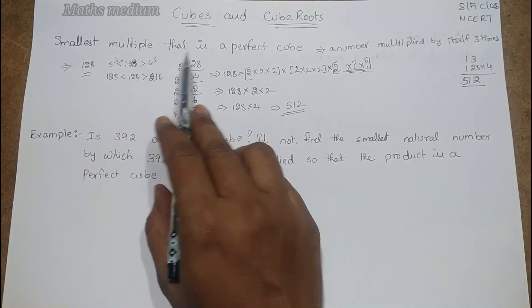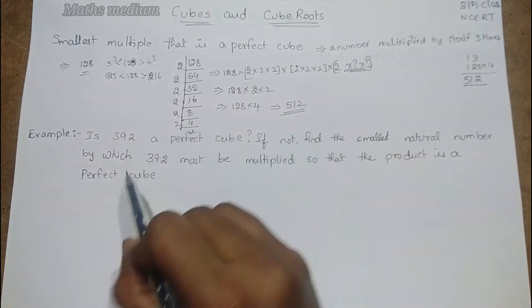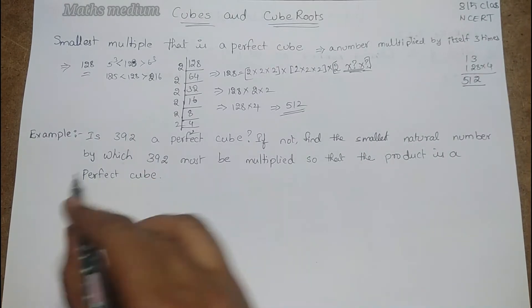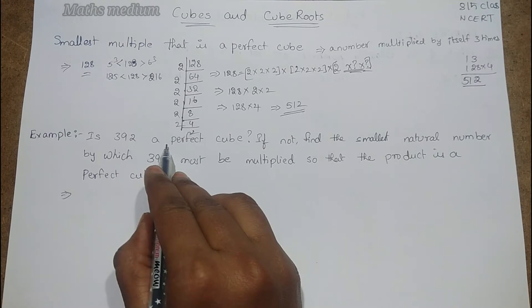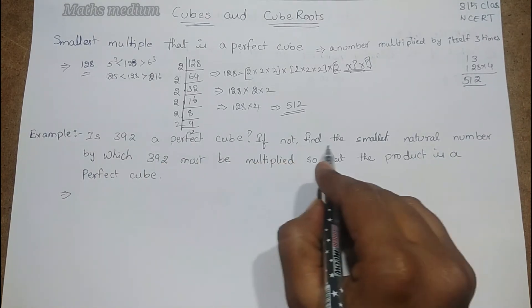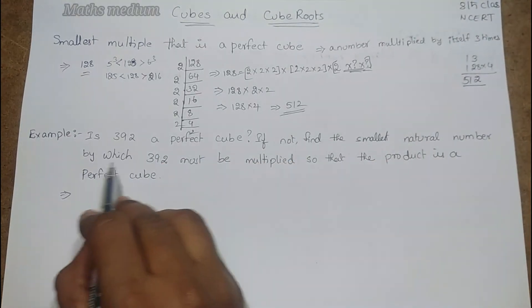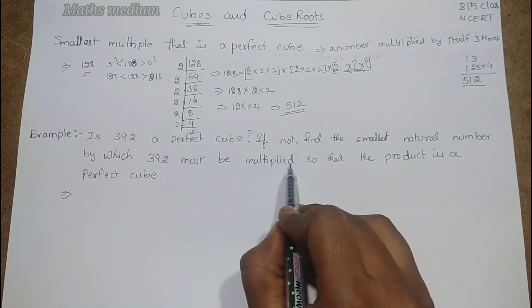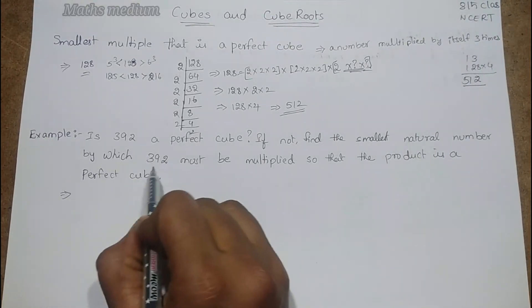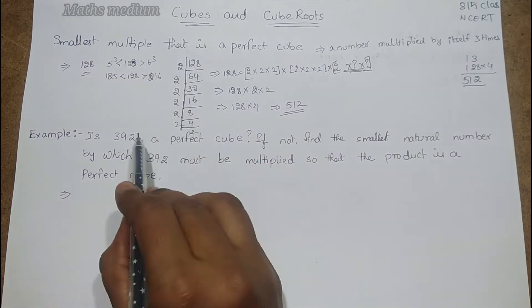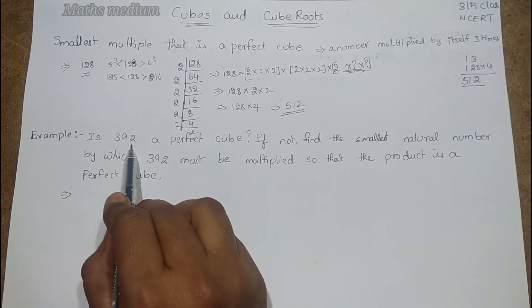I will explain through another example. Is 392 a perfect cube? If not, find the smallest natural number by which 392 must be multiplied so that the product is a perfect cube.